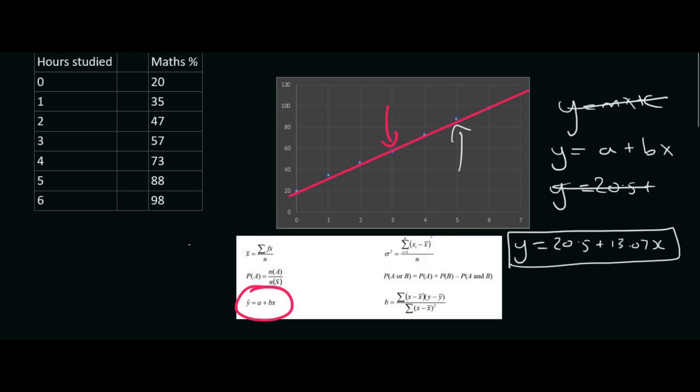For example, they might say, use the line to predict what someone's mark would be if they studied for 5.5 hours. So we know that 5.5 is an x value. So to work out the y value, you would take this equation and plug in 5.5. You're not going to go to 5.5 here and look over there. You're going to plug it into the equation. And what you get when you plug 5.5 in is 92.39%.